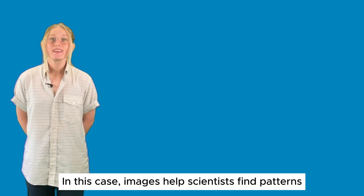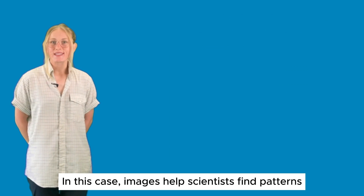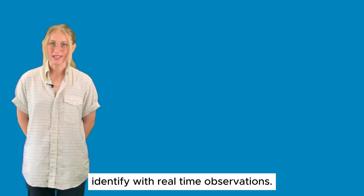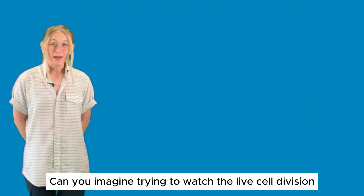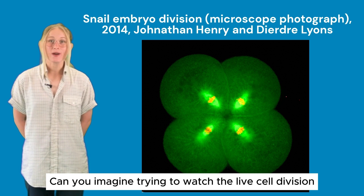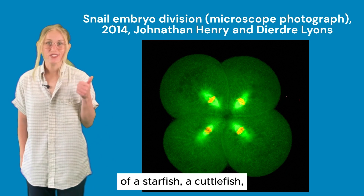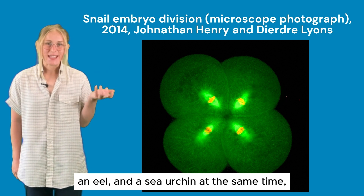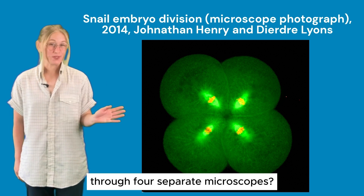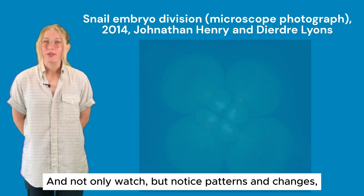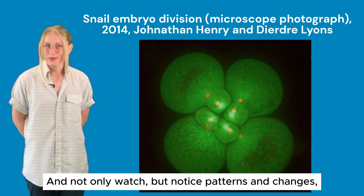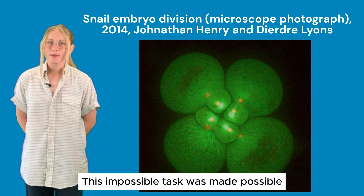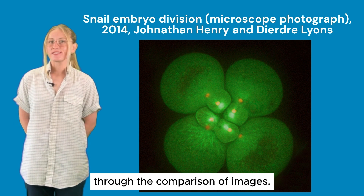In this case, images helped scientists find patterns that would be near impossible to identify with real-time observations. Can you imagine trying to watch the live cell division of a starfish, a cuttlefish, an eel, and a sea urchin at the same time through four separate microscopes — and not only watch, but notice patterns and changes? This impossible task was made possible through the comparison of images.